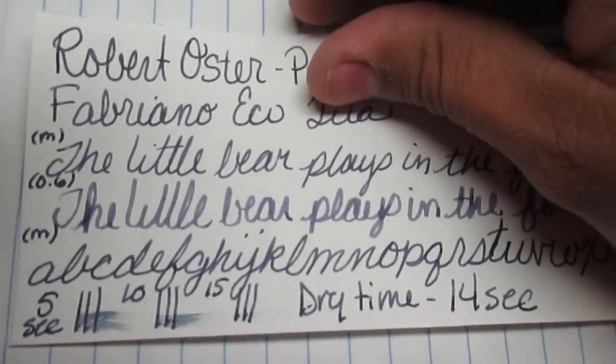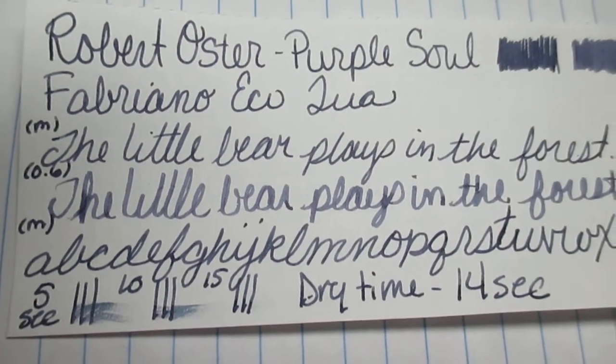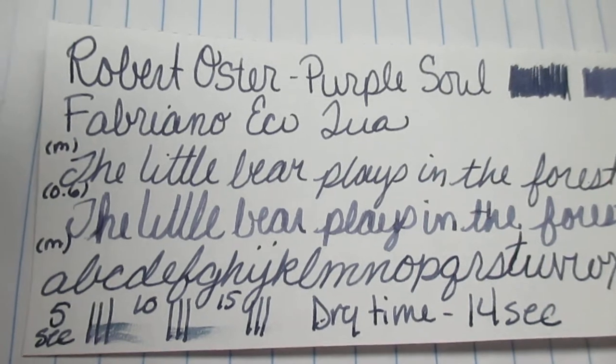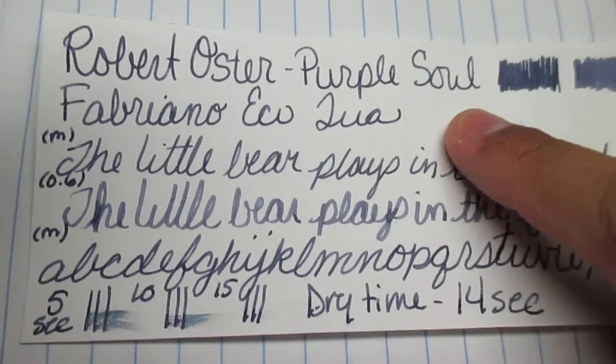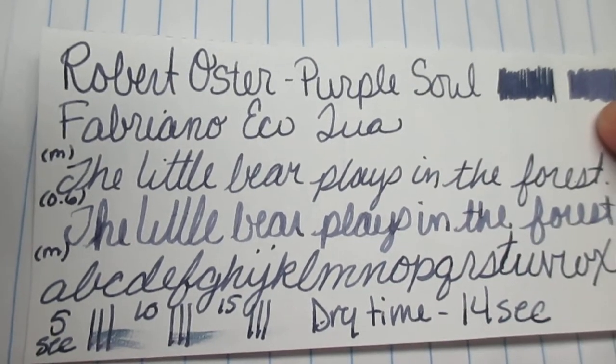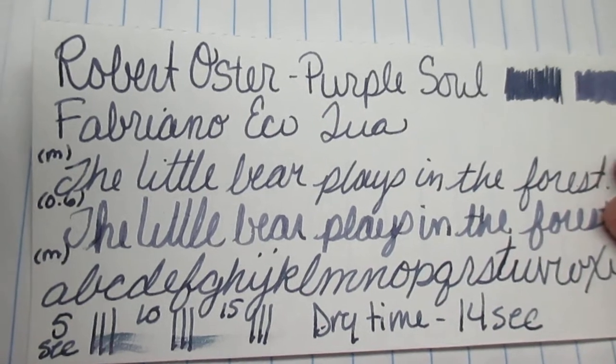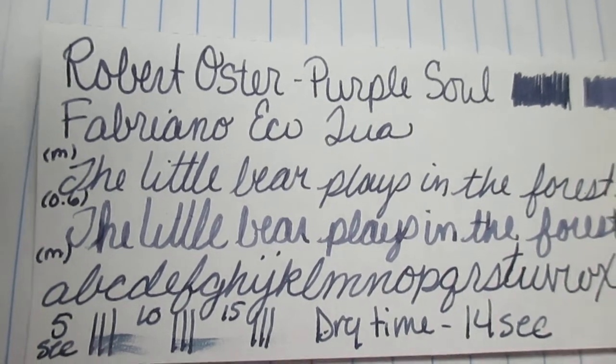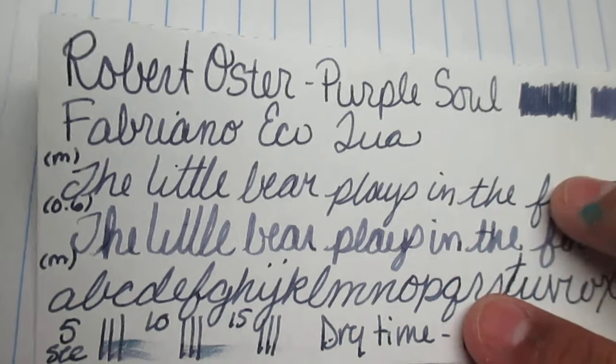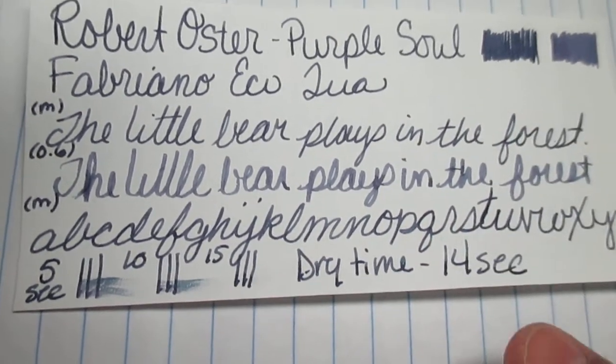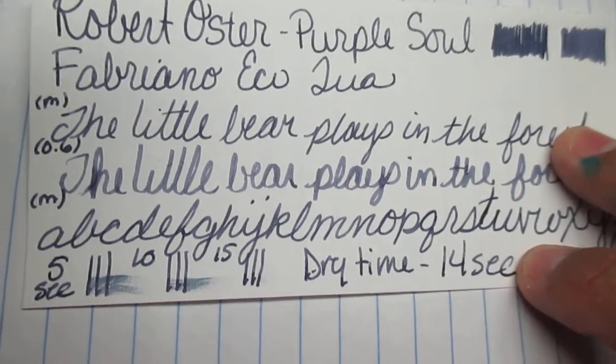Next, we should have Fabriano EcoQua. It's a pretty heavy paper. And I do my medium scrubby, then I do my 0.6 scrubby, then my phrase and my alphabet. And then the medium nib, it took 14 seconds to dry.